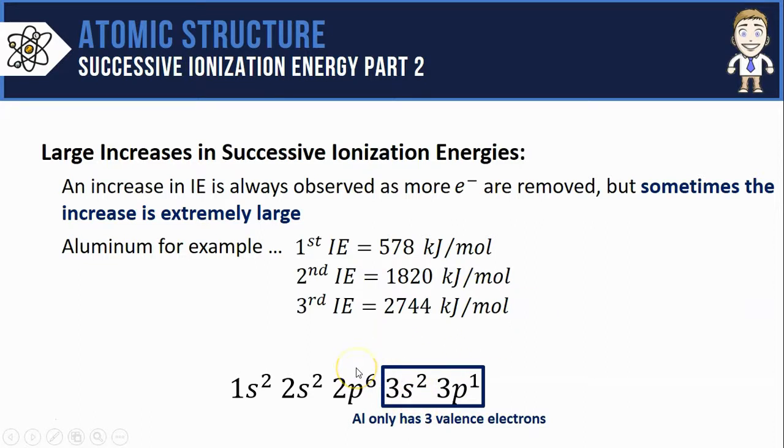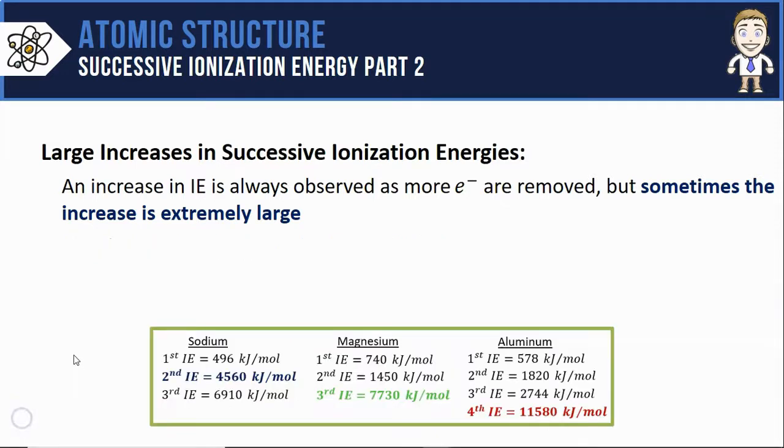That would have to come from the 2p⁶. Aluminum's large increase in successive ionization energy wouldn't happen until the fourth electron removal. So here's all three examples we looked at with their large increase in successive ionization energy highlighted.